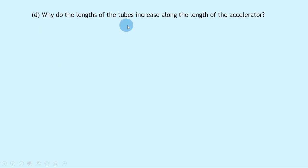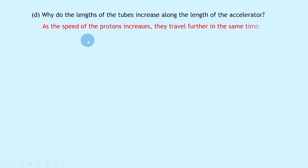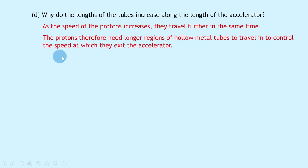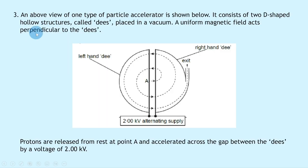Part (d) asks why the lengths of the tubes increase along the length of the accelerator. As the speed of the protons increases, they travel further in the same time. The protons therefore need longer regions of hollow metal tubes to travel in, to control the speed at which they exit the accelerator.